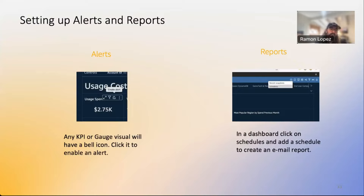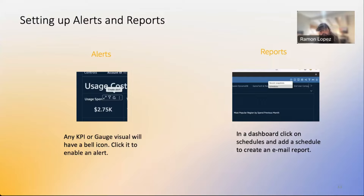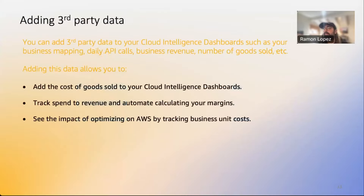For users who don't need to see the dashboard every day but just want a summary every Monday or first of the month, you can leverage paginated reporting in QuickSight. Paginated reporting allows you to design and distribute pixel-perfect, paginated reports that include the information users need. These can be scheduled to be sent via email and can include a multi-page PDF, CSV, or Excel. Paginated reporting is a hot new feature in QuickSight, and CUDOS is a great use case for getting data to the right people at the right time in the format they want.